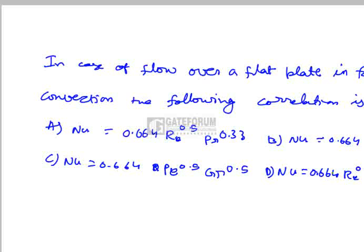Option C: Nu = 0.664 × Pe^0.5 × Gr^0.5, where Pe is the Peclet number. Option D: Nu = 0.664 × Re^0.5 × Gr^0.5. In forced convection, the Nusselt number is a function of the Reynolds number and is not a function of the Grashoff number, because the Grashoff number is based on buoyancy forces.